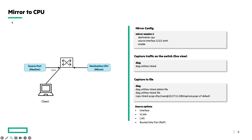The last type is the mirror to CPU type. With the mirror to CPU type, it is possible to mirror traffic from a local source to the switch CPU. When you mirror the traffic to the switch CPU, it is possible to save that to a packet capture file and copy that to a remote destination. To configure this, first specify the mirror session — mirror session 1 — then specify the destination CPU. Then the source interface, and don't forget to enable the mirror session.